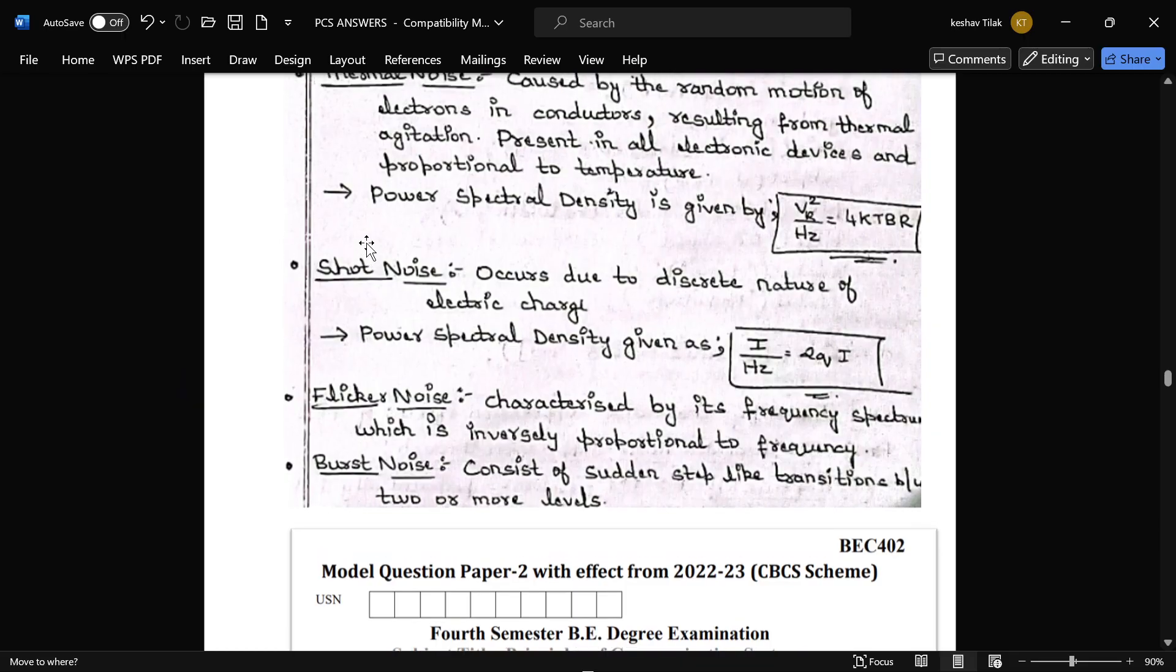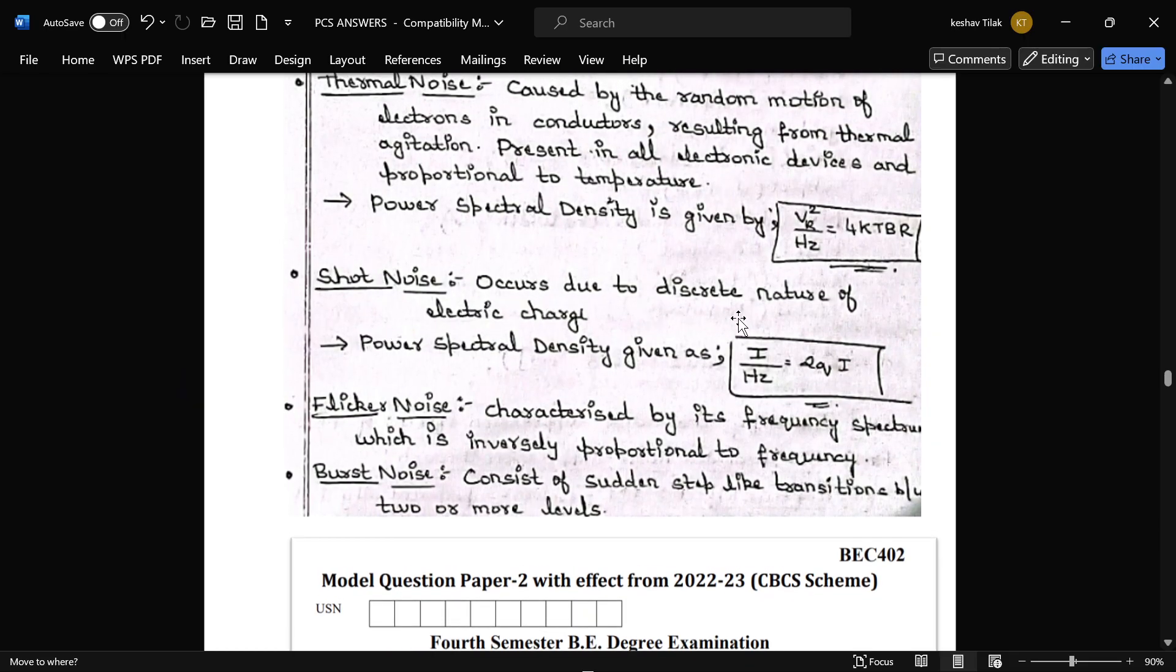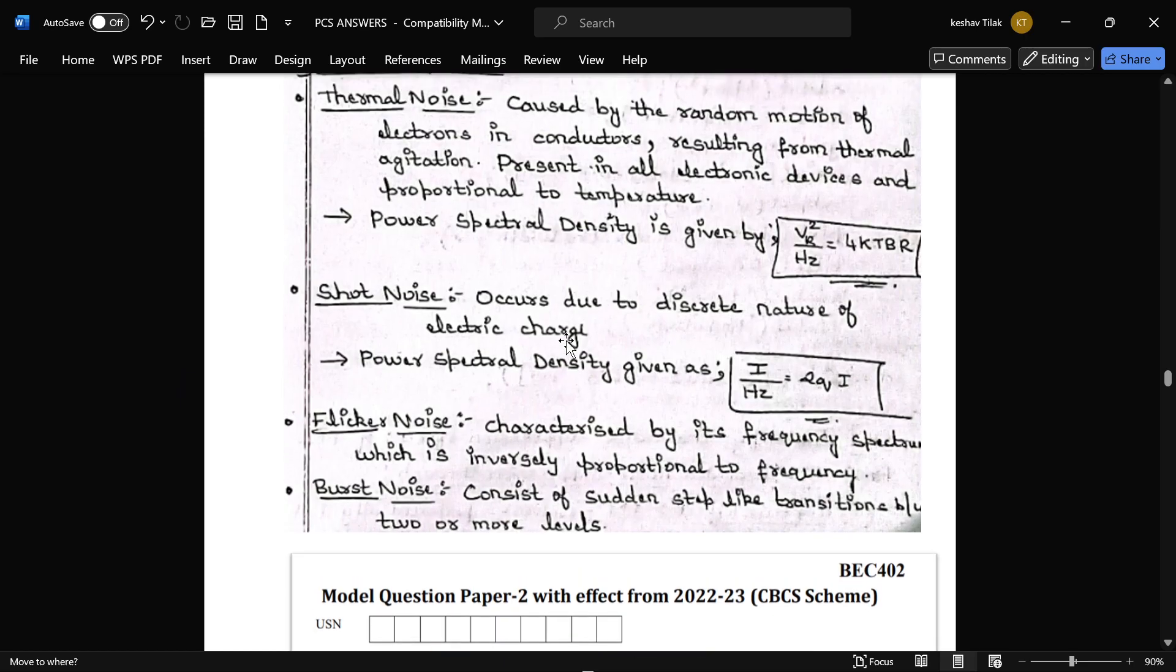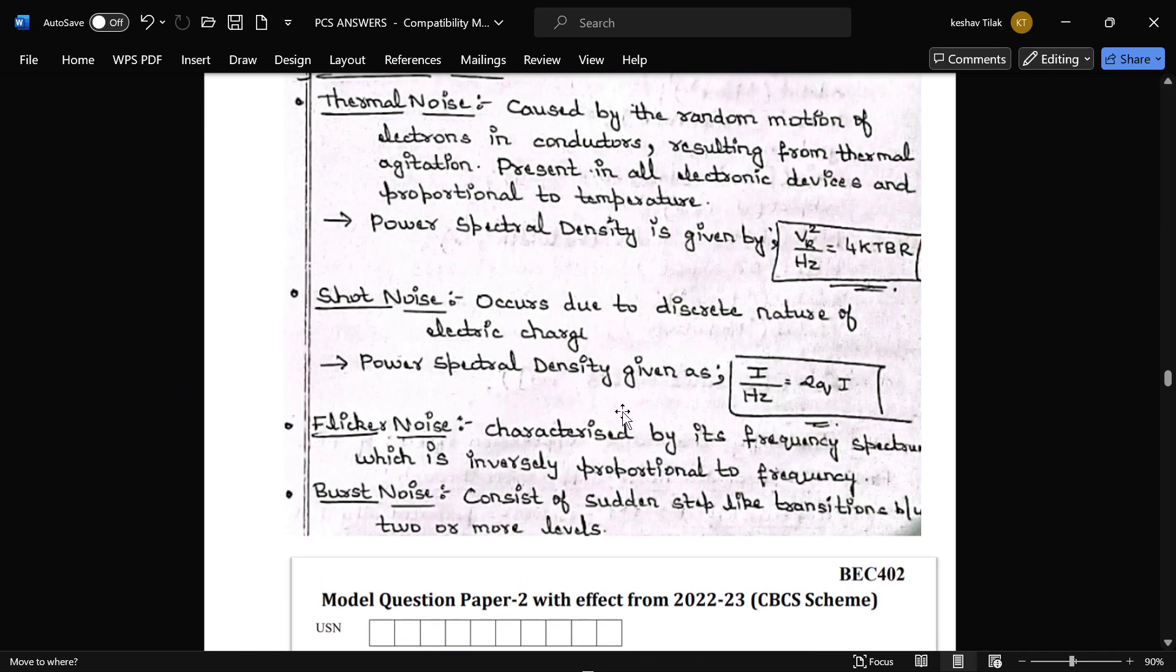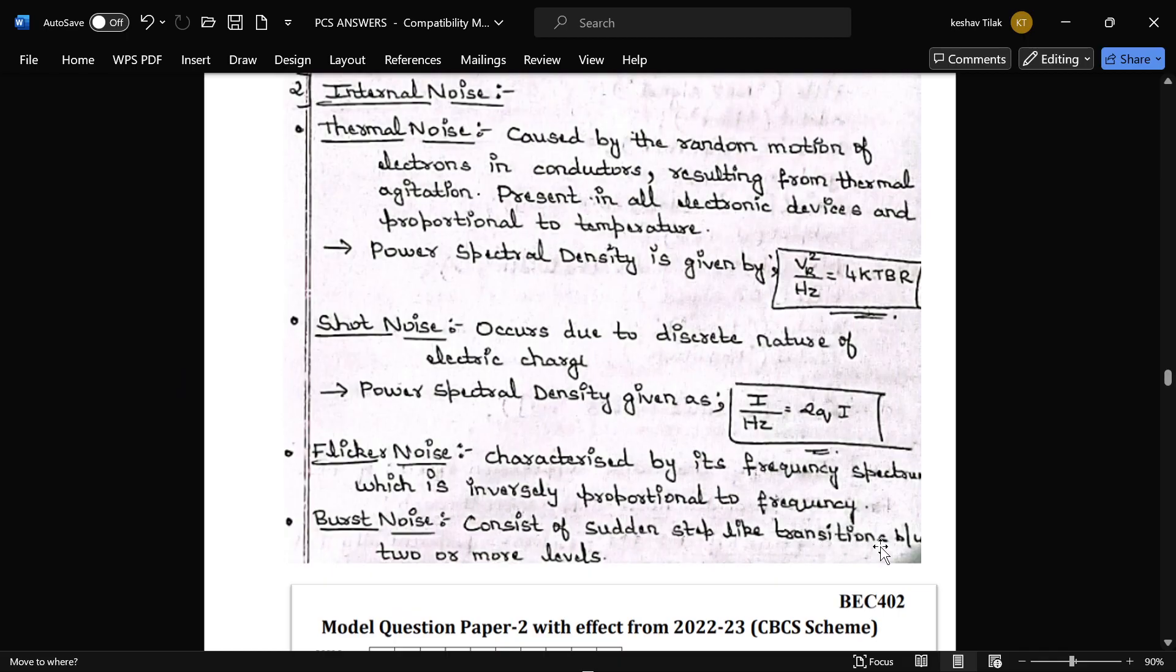And next is shot noise. Occurrence due to discrete nature of electric charge. Power spectral density by Hz is equal to 2qI. Next flicker noise. This is characterized by its frequency spectrum which is inversely proportional to the frequency. And burst noise. That is consist of sudden step like transition between two or more levels.